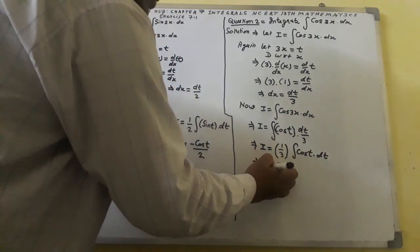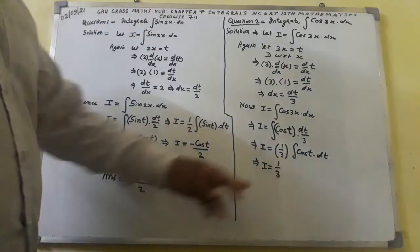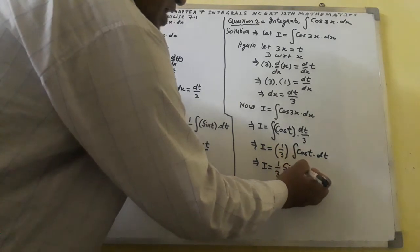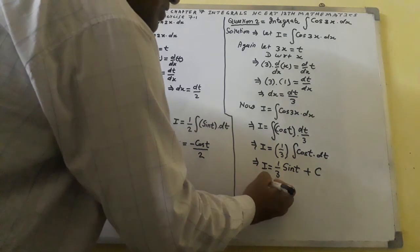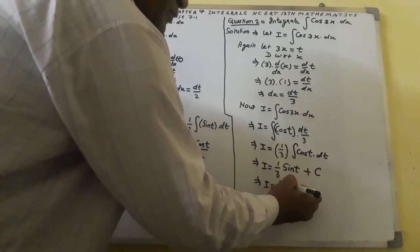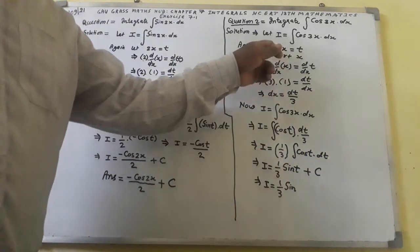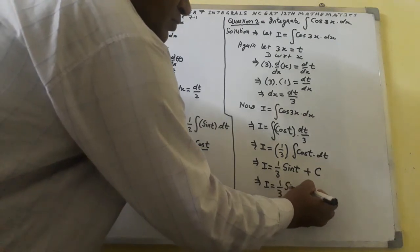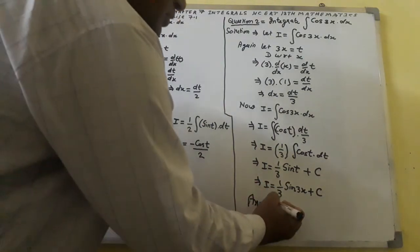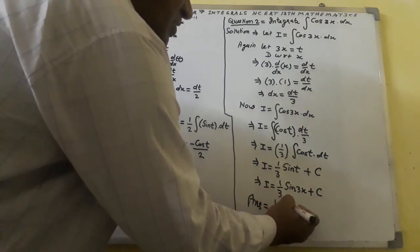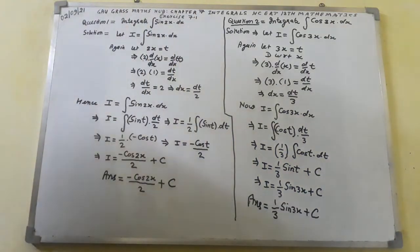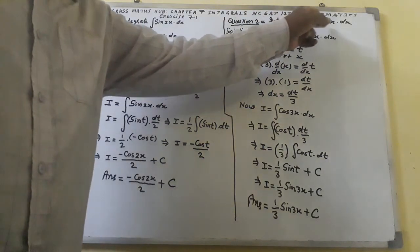This implies I equal to (1/3) sin(t). In place of t I shall write 3x. So the answer we have got is I equal to (1/3) sin(3x) plus c. This is the correct answer of question number 2: integral cos(3x) dx.